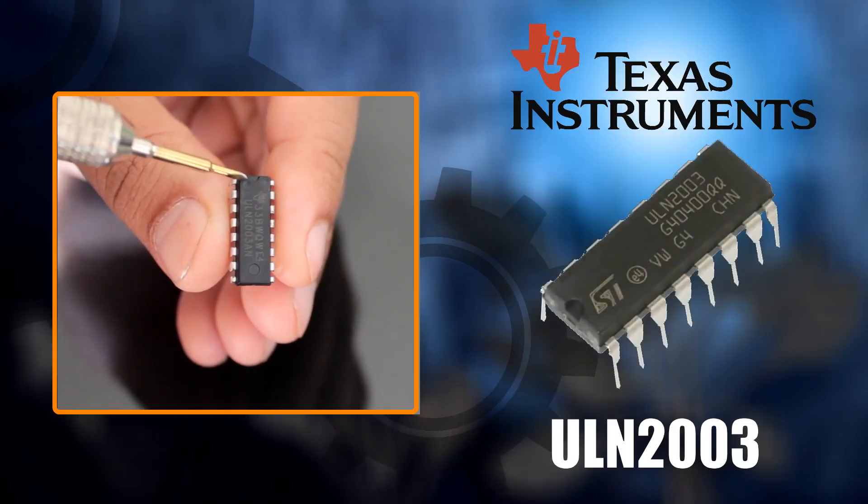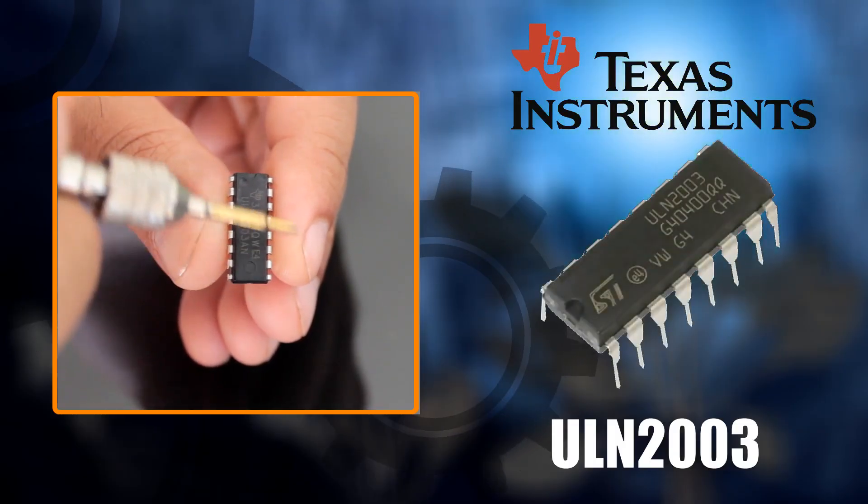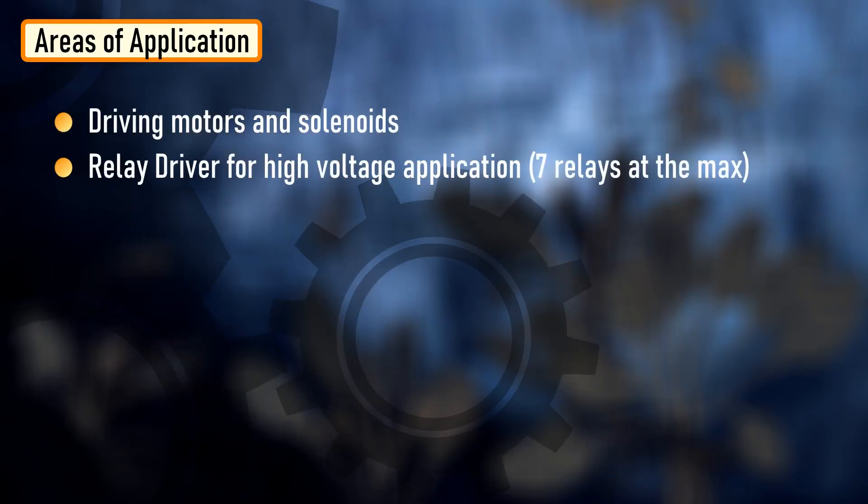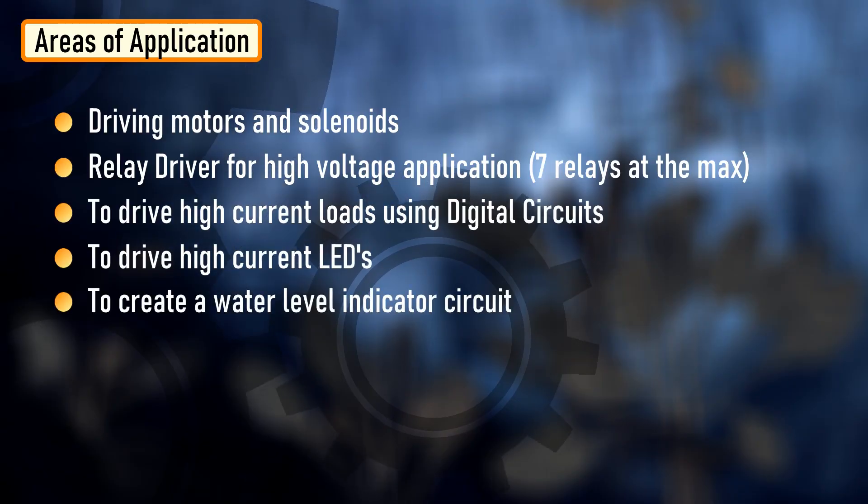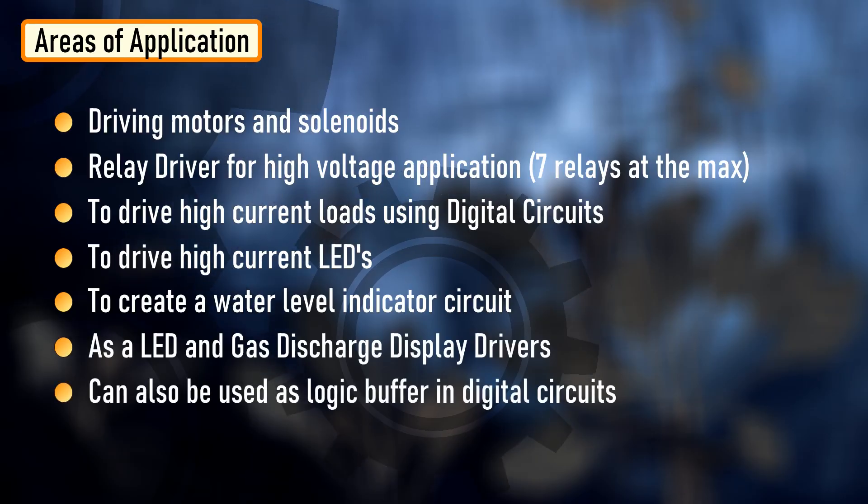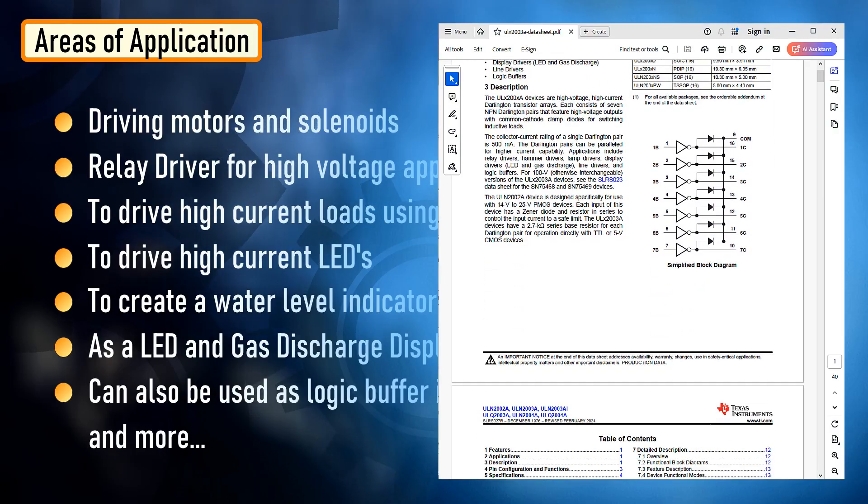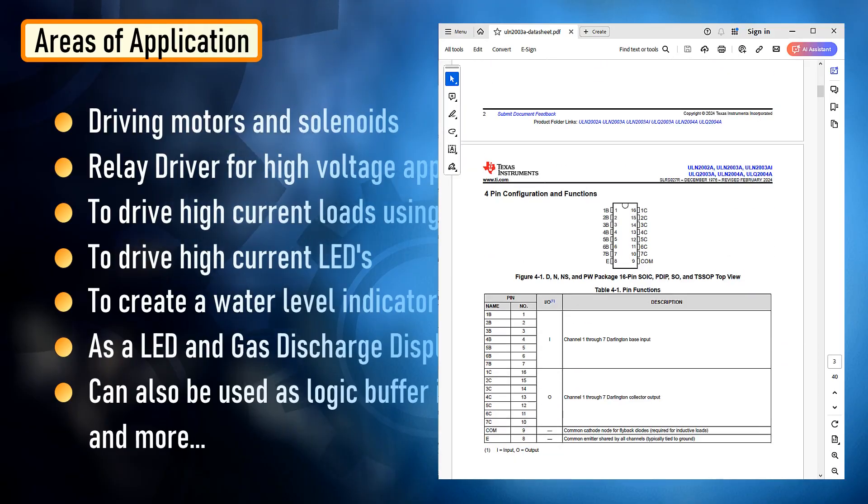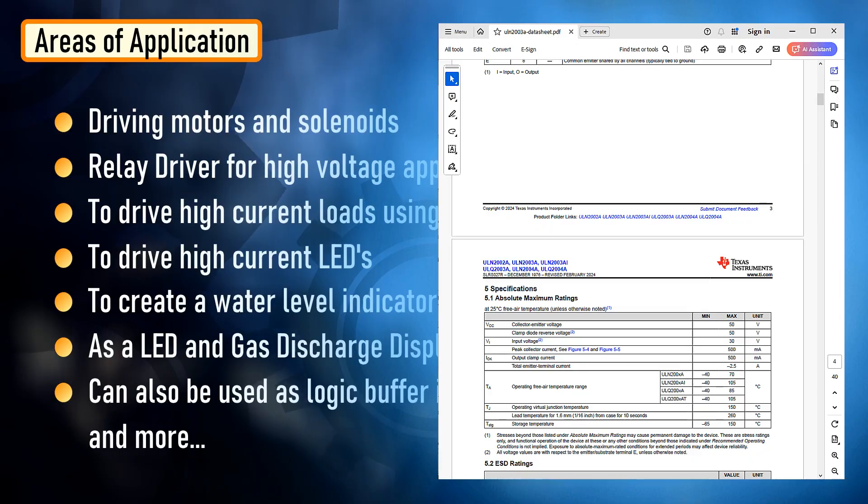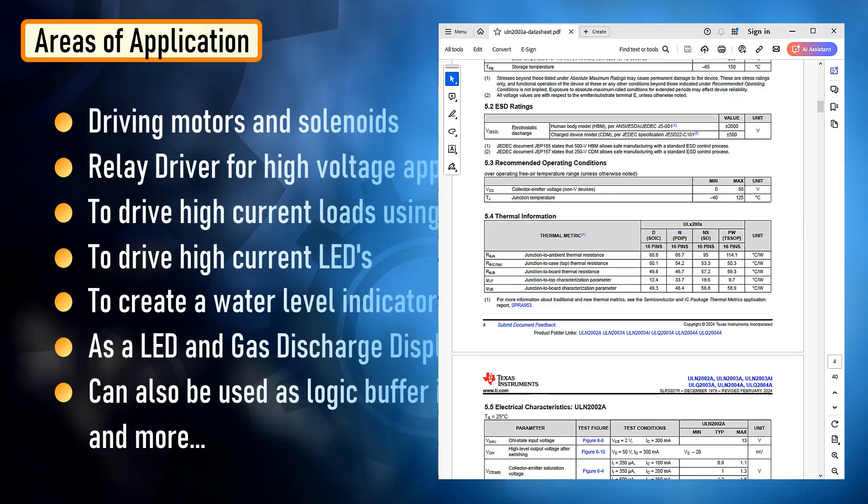The ULN 2003 IC produced by Texas Instruments can be used for driving motor and solenoids, can be used as a relay driver for high voltage application, to drive high current loads using digital circuits, to drive high current LEDs, to create a water level indicator, as a LED and gas discharge display driver, can also be used as a logic buffer in digital circuits and more. For more information about the packaging and the material used, please have a look at the datasheet. The link is in the description below. Always consult a manufacturer's datasheet before assuming industrial conventions. No matter how intuitive or obvious they may be. In the face of ambiguity, refuse the temptation of guess by Zen of Python.